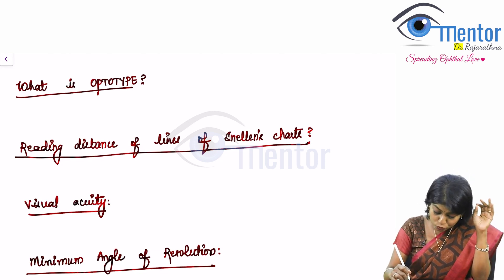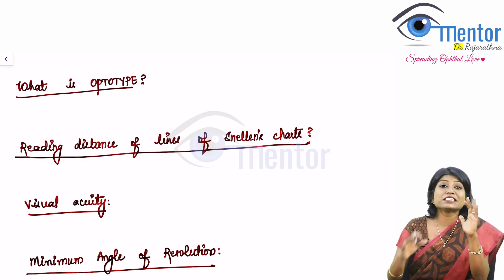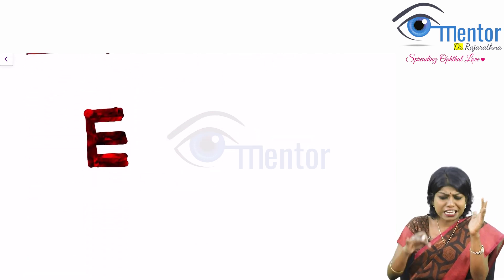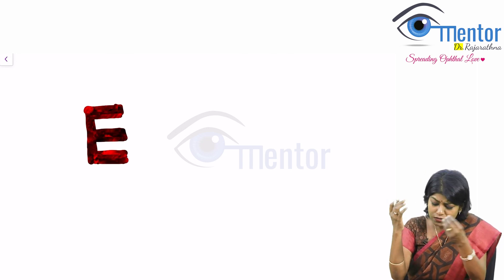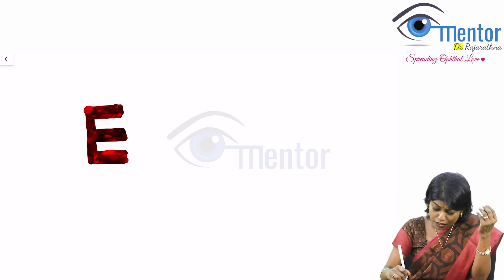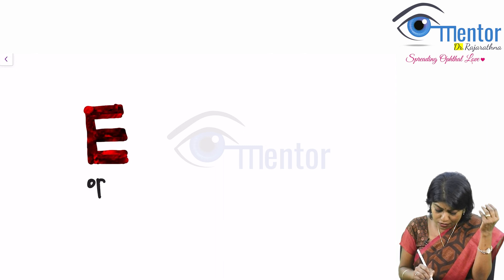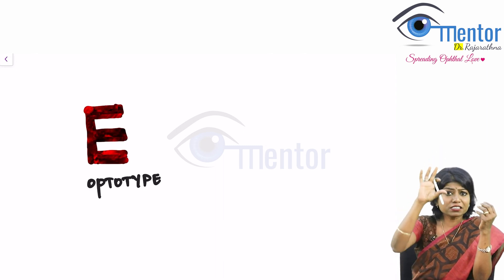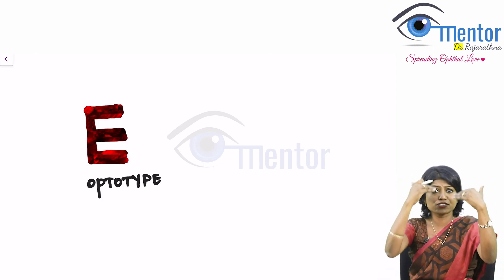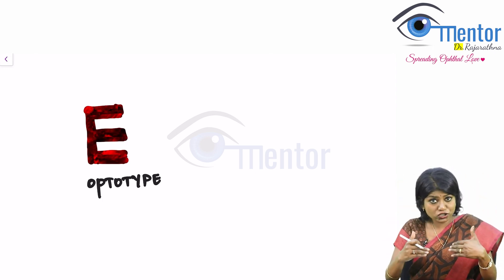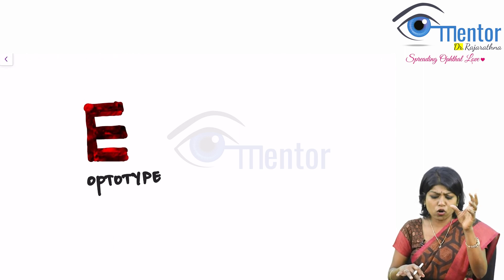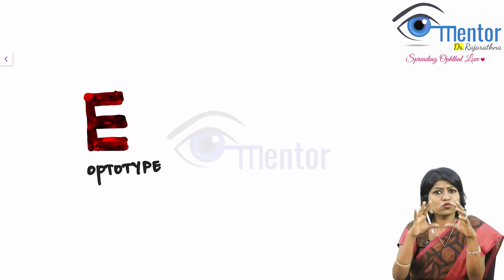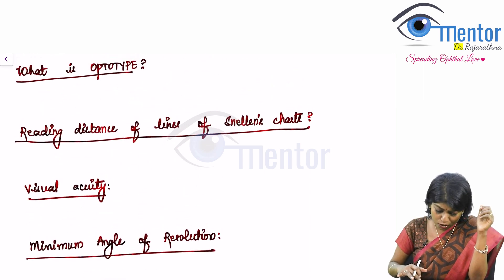So what are these concepts? What is an optotype? Optotype is a letter on a Snellen's chart. So if it is an E this is the optotype. The letter on a vision chart is optotype. So you can have a single letter as in the first line or you can have multiple letters as you go down the chart. So the letter or it is a C that ring all those are called optotypes.